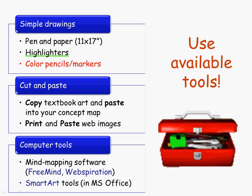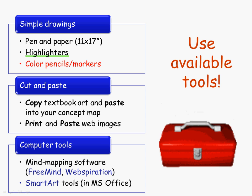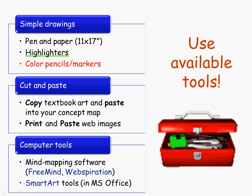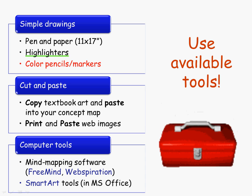I recommend using lots of colors and maybe different kinds of drawing tools. You can use highlighters to color-code different areas or processes, and colored pencils or colored markers to highlight different things. You'll also want to think about cutting and pasting from your textbook — you can photocopy or scan things from your textbook and paste them into your concept map. That would be considered fair use since you're using it for personal purposes and you've already purchased the book. You can also find web images, print those out, and cut and paste those into your concept map.